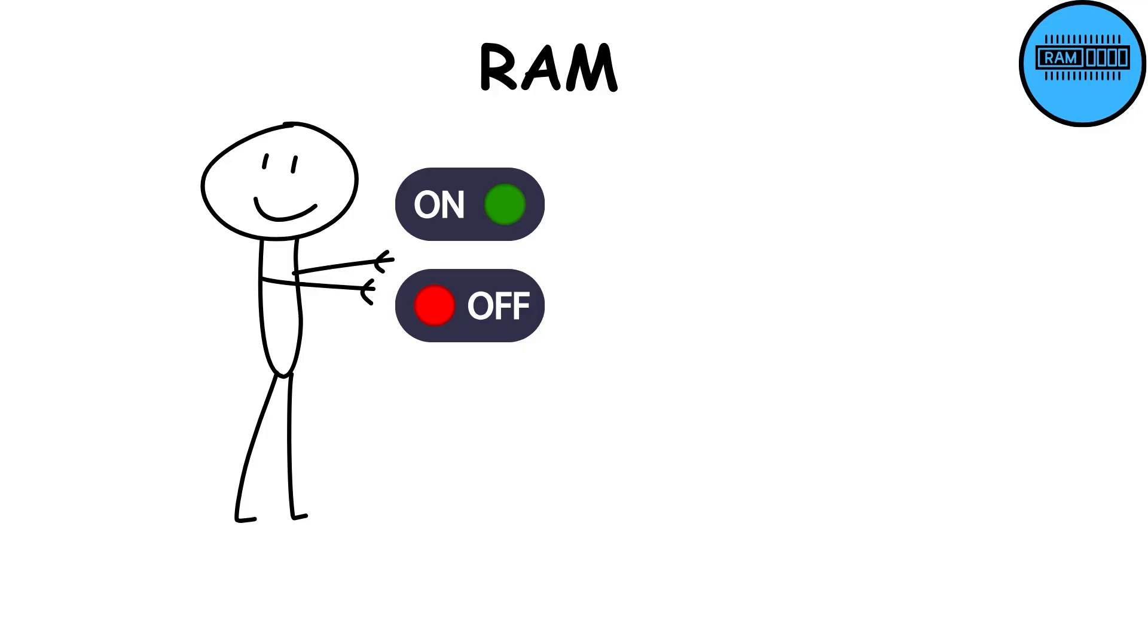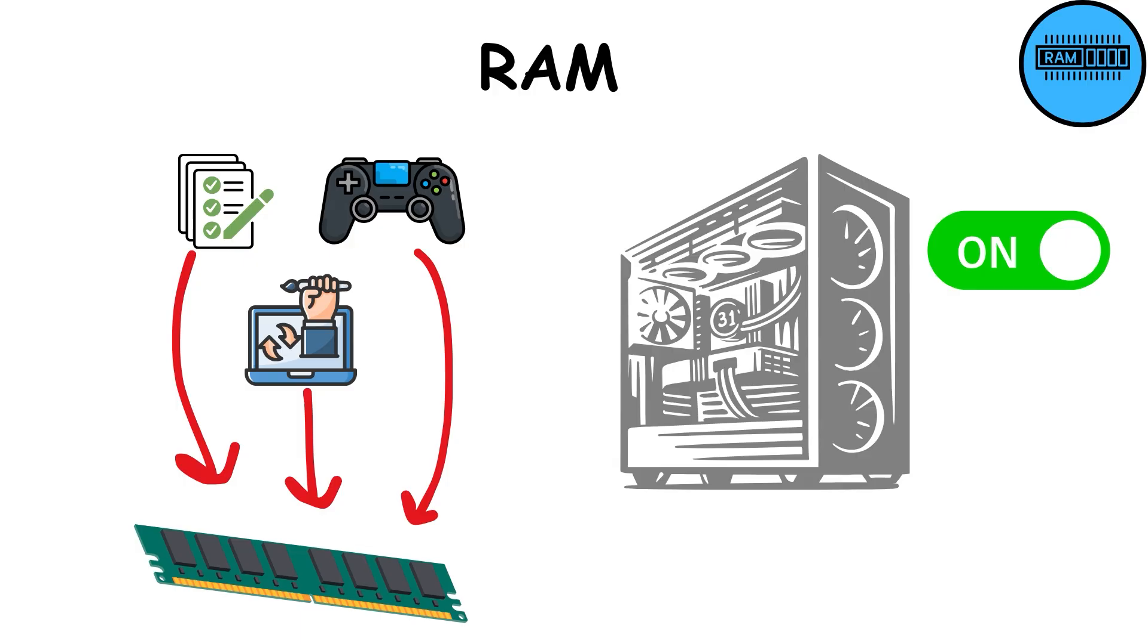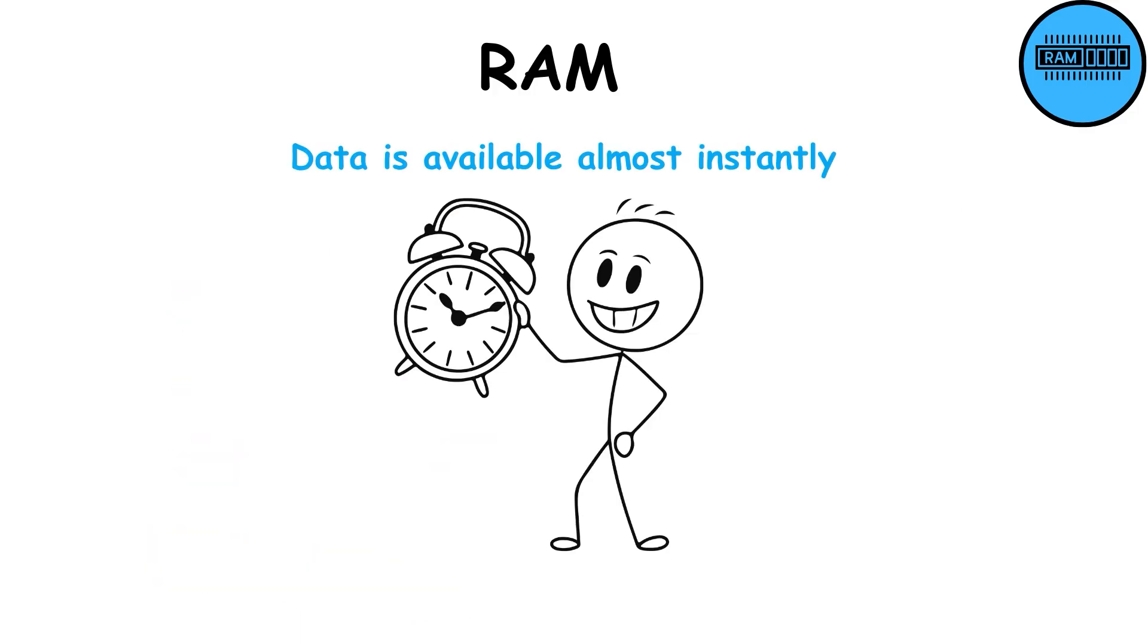However, RAM is not permanent. Everything in it is erased once the computer shuts down. Programs, games, and processes all run through RAM while the computer is on. Its biggest advantage is speed. Accessing data from RAM is almost instant compared to a hard drive, which makes the computer more responsive.